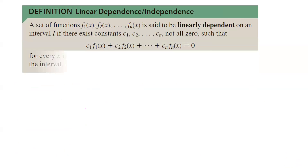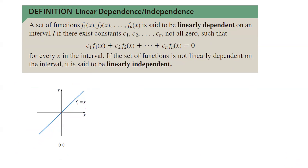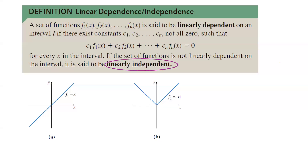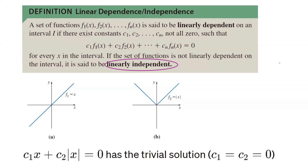An example of functions that are not linearly dependent: f(x) equals x and absolute value of x. These two functions are not dependent. There is no way you can find c1 multiplied by x plus c2 multiplied by absolute value of x equals 0. So those ci's must be equal to 0 — you must have a trivial solution. So basically, they are linearly independent from each other. For the equation c1·x plus c2·|x| = 0, it only has trivial solutions; c1 and c2 must be equal to 0, which satisfies the definition of linearly independent functions.